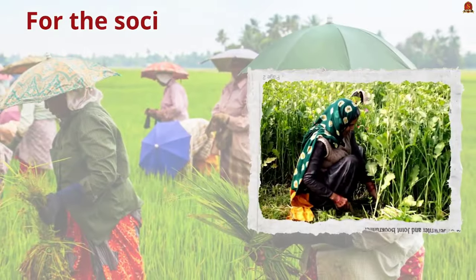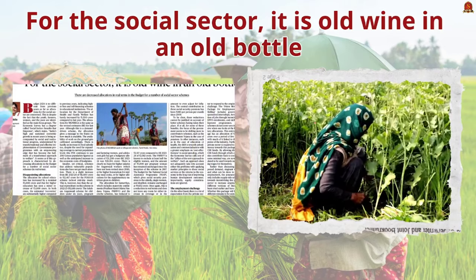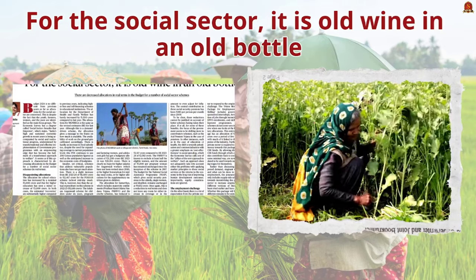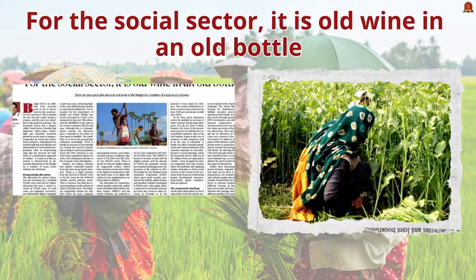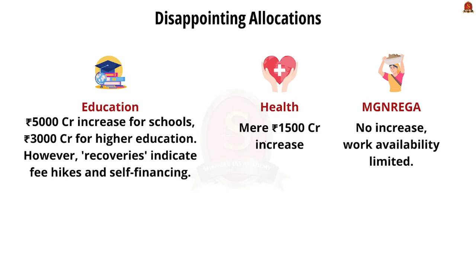Our next article covers budgetary allocation specifically for the social sector. Despite focusing on youth, farmers, women, and the poor, Budget 2024 allocations for the social sector have not been significantly increased. With respect to education, the allocation for school education increased by 5,000 crore and for higher education by 3,000 crore; however, expected recoveries are higher, indicating an increase in fees and self-financing schemes. For health, the Department of Health and Family Welfare's budget increased by a mere 1,500 crore, so the issue of out-of-pocket expenditure will prevail.